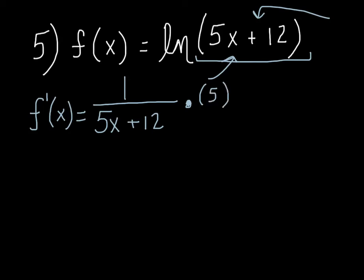You can leave it just like that. I know that some of you might like to see what it would look like simplified. Well, simplified, it would just be 5 over 5x plus 12.